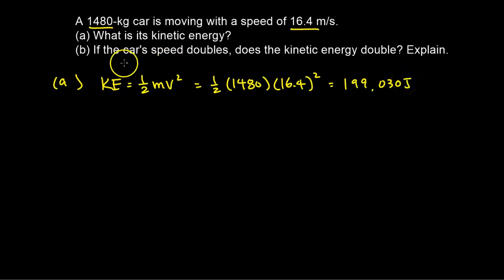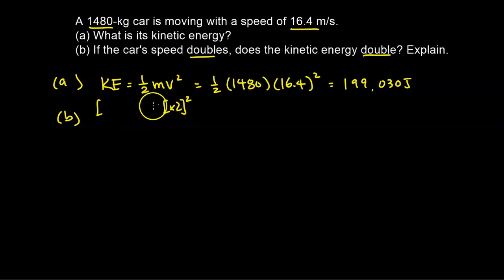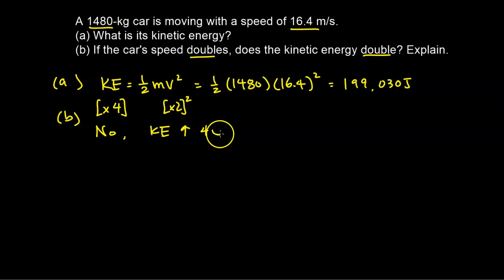The second part asks: what if the car's speed doubles — does the kinetic energy double? No, it does not. Because speed is squared in the equation, if the speed doubles (×2), the right side increases by 2² = 4 times. So the kinetic energy must also change by a factor of 4. The kinetic energy will increase 4 times, not 2 times, because speed is squared in the equation.